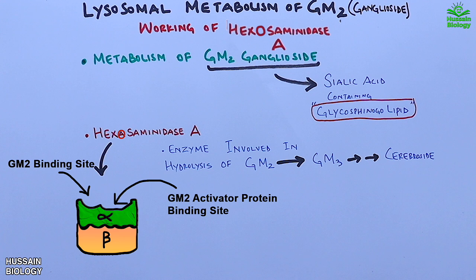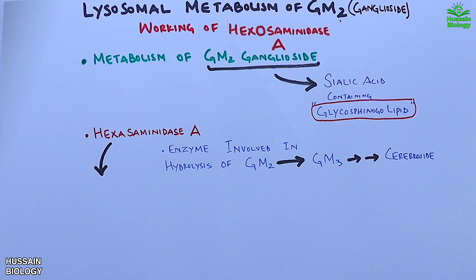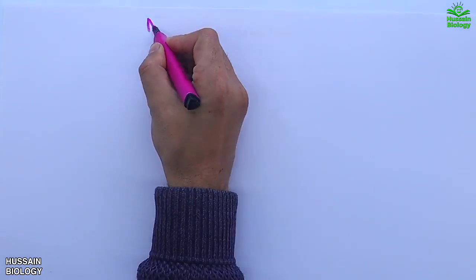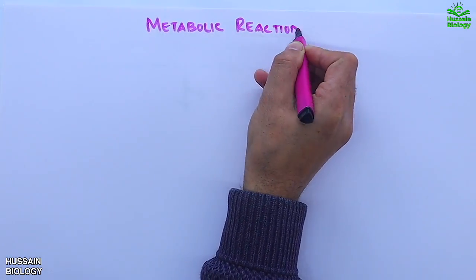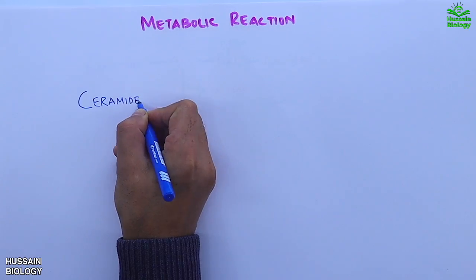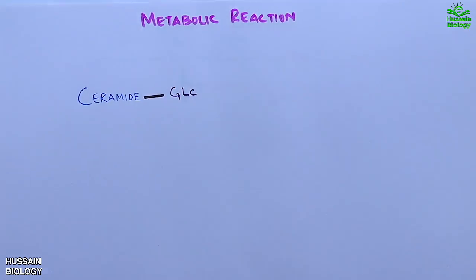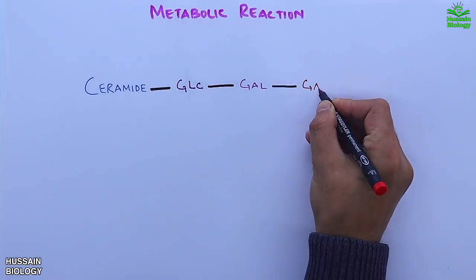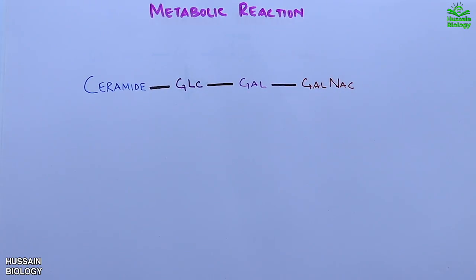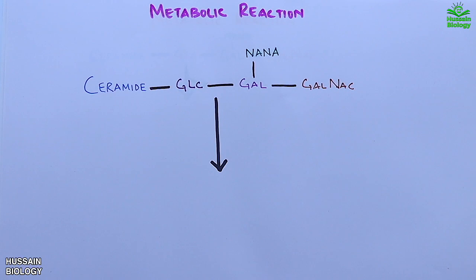Now let's look at the metabolic reactions of GM2 ganglioside. Here we have the GM2 ganglioside molecular structure, having a ceramide tail bound to glucose, galactose, and GalNAc (N-acetylgalactosamine), and on the side we have NANA, which is N-acetylneuraminic acid.